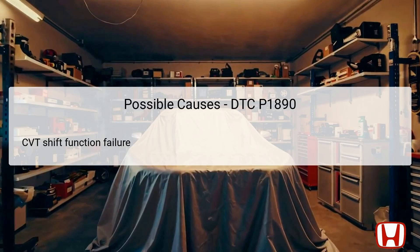The primary possible cause of DTC P1890 is a failure in the CVT shift function. This can stem from various underlying issues, such as problems with the hydraulic pressure control solenoids, which are responsible for managing the drive and driven pulley pressures. Any malfunction in these components can disrupt the expected pulley speeds, leading to significant discrepancies that trigger the DTC. Potential wear in the CVT system or issues like low fluid pressure can also influence the overall functionality of the transmission, possibly leading to the DTC being stored in the TCM memory.